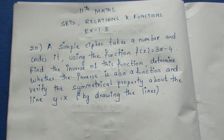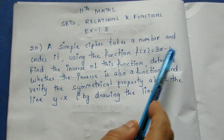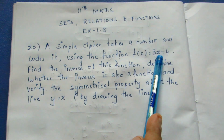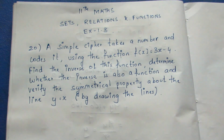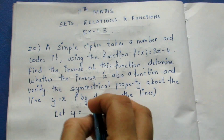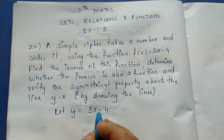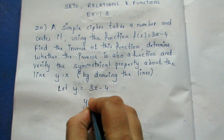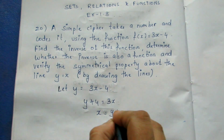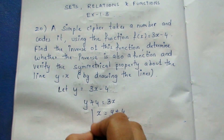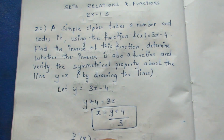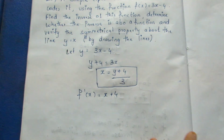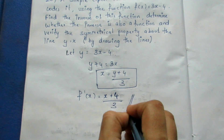To find the inverse of this function, let y = 3x - 4. Solving for x: y + 4 = 3x, so x = (y + 4)/3. Therefore, F inverse of x is equal to (x + 4) / 3. This is the inverse.